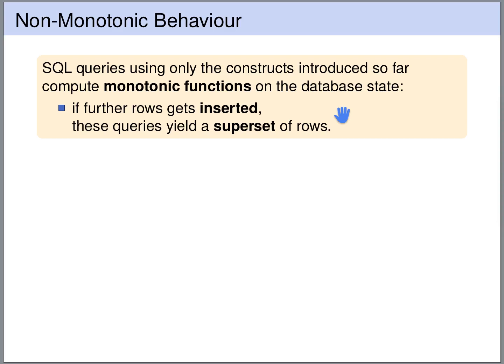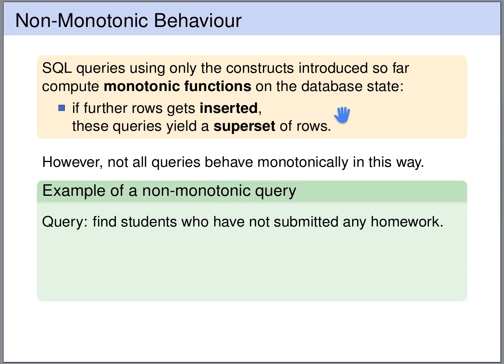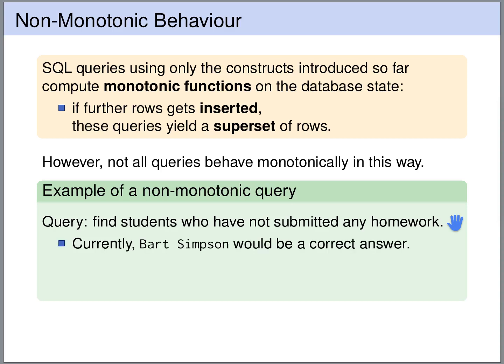However, not every query that we want to formulate is monotonic. For instance, consider the following query: we want to find the students that have not submitted any homework. In the current database state, Bart Simpson is among these students, so Bart Simpson would be among the rows of the result of the query.